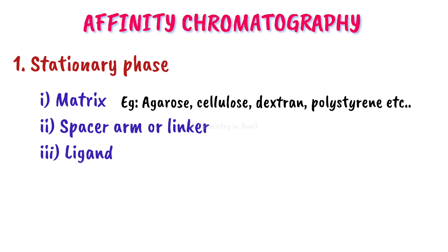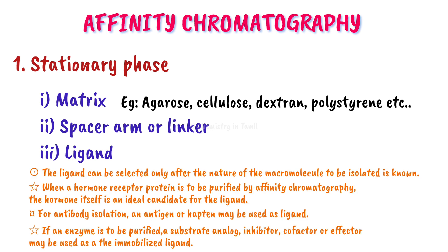In the matrix, we connect a spacer arm or linker to the ligand. The ligand can be polyclonal antibodies, monoclonal antibodies, DNA, RNA, or a substrate. The spacer arm is connected to the ligand — this forms the stationary phase, which is available in the market for use.